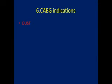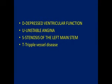The sixth mnemonic is for CABG indications — coronary artery bypass grafting. Apart from blockage in the coronary artery, other indications can be remembered with DUST: D for depressed ventricular function, U for unstable angina, S for stenosis of the left main stem, and T for triple vessel disease.